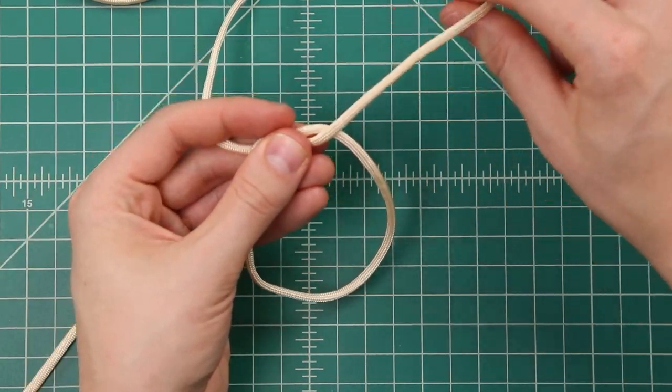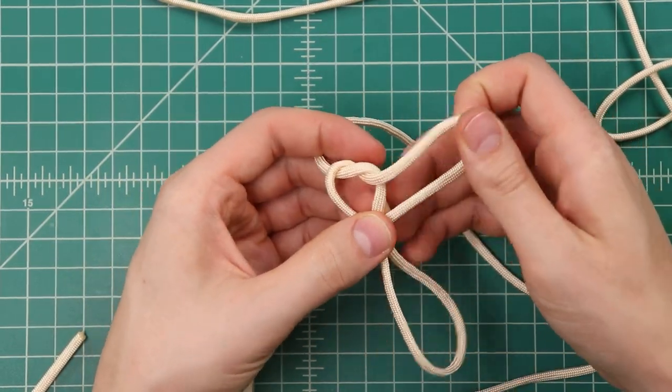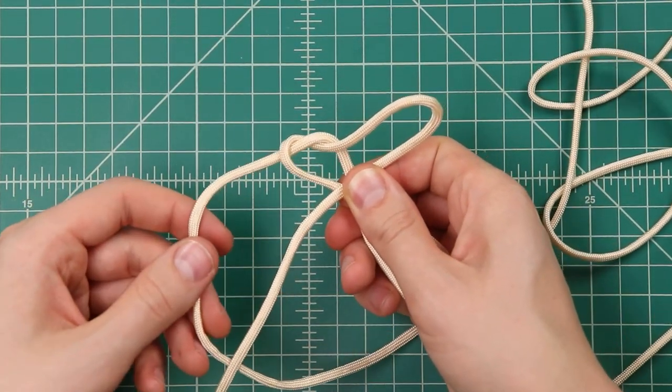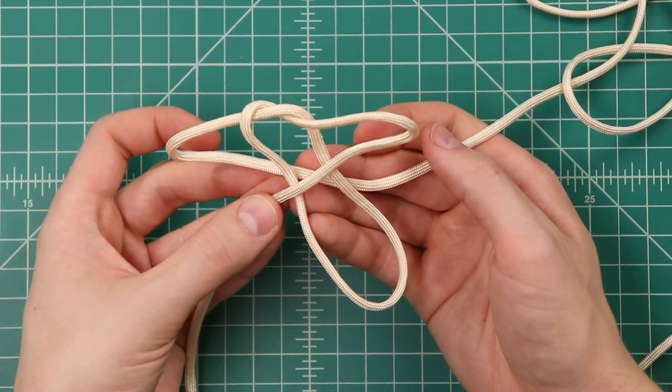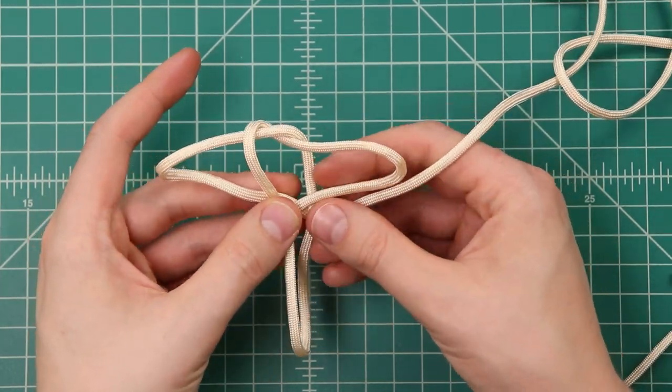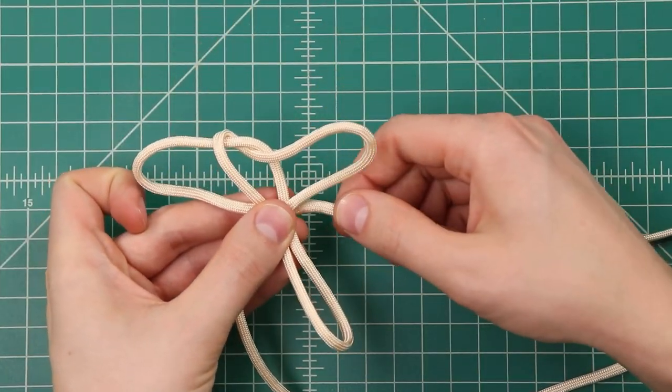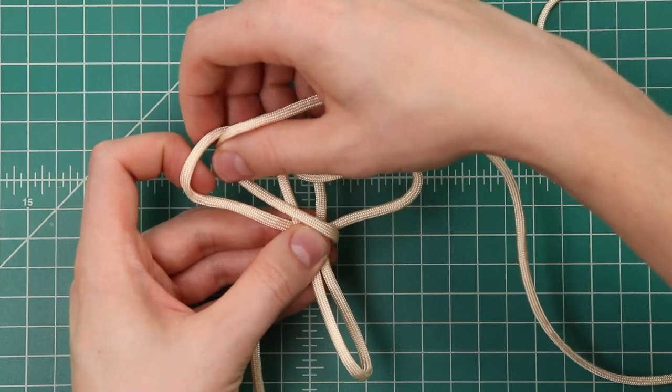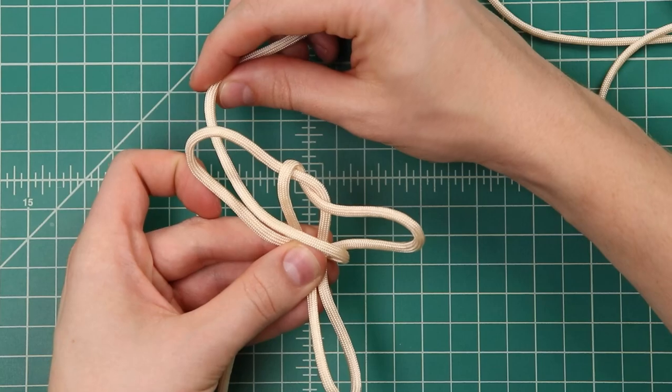So once you have that knot done, take that right side cord that's coming out on top, and make kind of an ear going off to that side. And with this other one, we'll make an ear underneath. So they're just crossing over in the middle like that. And then each one of those, we want to wrap around. So this left ear is coming behind. We're going to wrap it across the front, and then it's going to go through that loop. So across, pull all the slack through that loop.